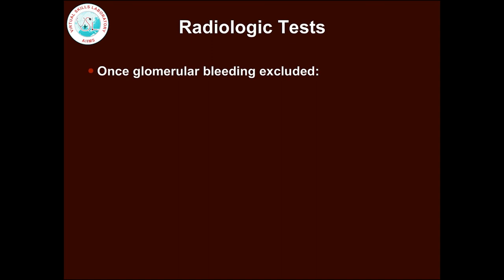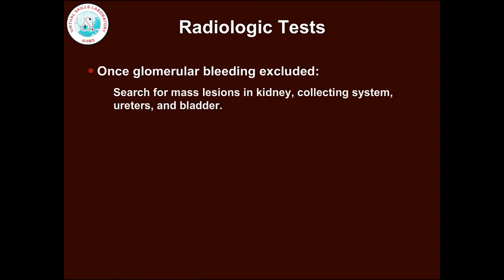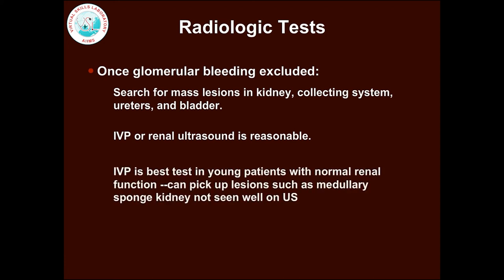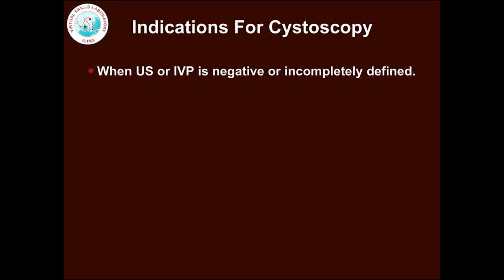Once glomerular bleeding is excluded, search for mass lesions in the kidney, collecting system, ureters, and bladder. If there is no specific clue, an intravenous pyelogram or renal ultrasound is reasonable. IVP is the best test in young patients with normal renal function and can pick up lesions such as medullary sponge kidney not seen well on ultrasonography. CT scan is needed for diagnosing tumors less than 3 cm. When ultrasonography or IVP is negative or incompletely defined, cystoscopy is indicated.